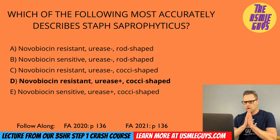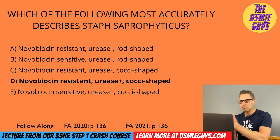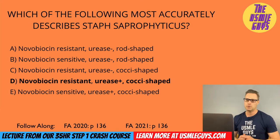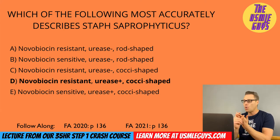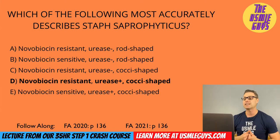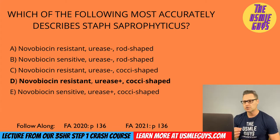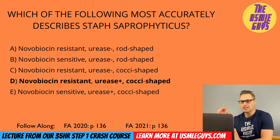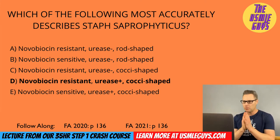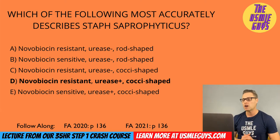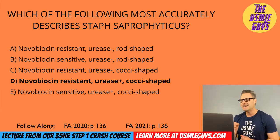The correct answer here is D — Staph saprophyticus. It is catalase positive, coagulase negative, urease positive, and a cocci found in clusters. It is also novobiocin resistant. It is normal flora of the female genital tract and perineum. A common exam question: it is the second most common cause of uncomplicated UTIs in younger females. The most common cause of an uncomplicated UTI is E. coli, which is gram-negative.